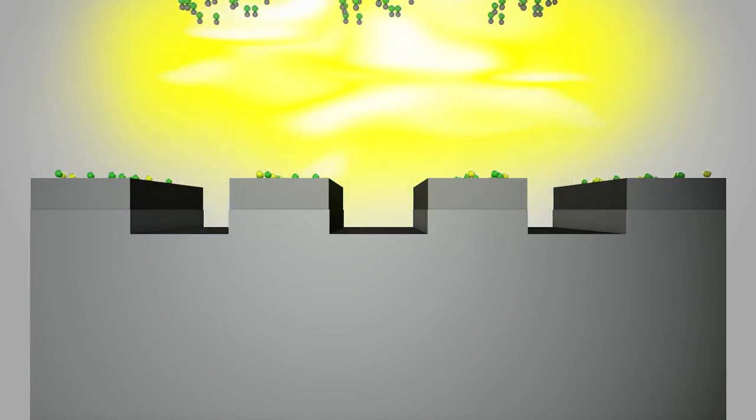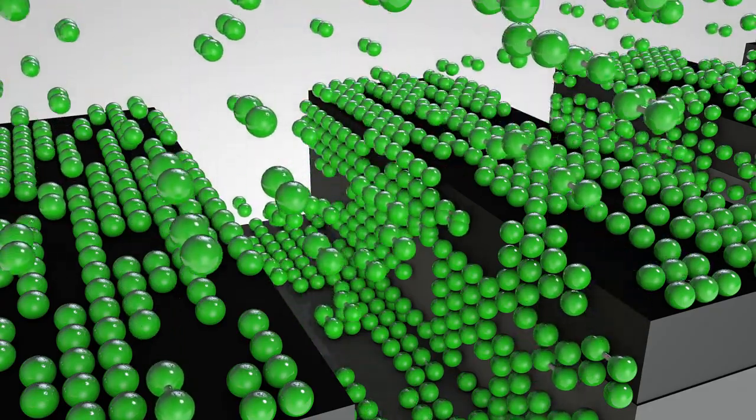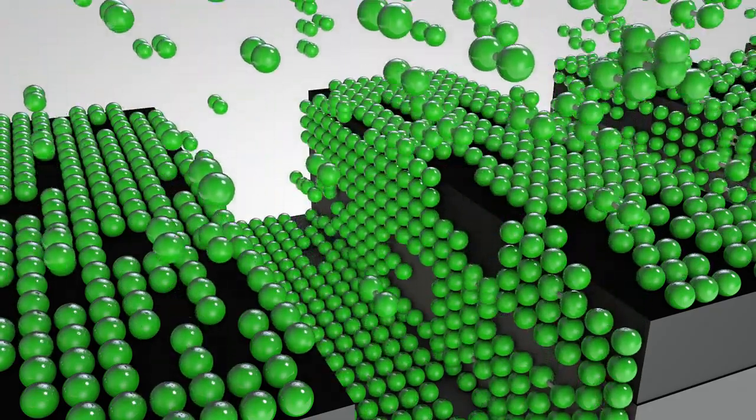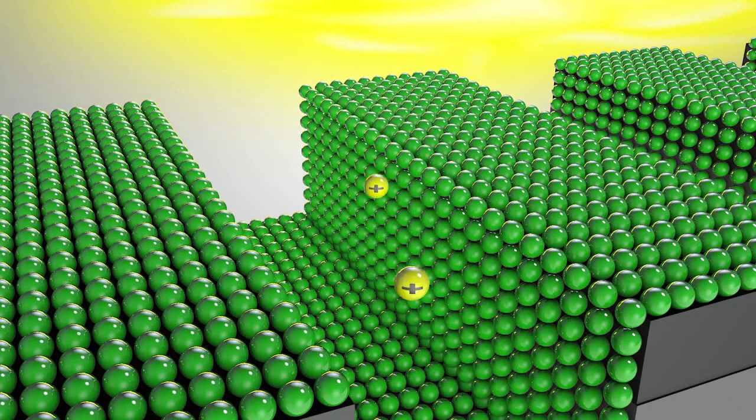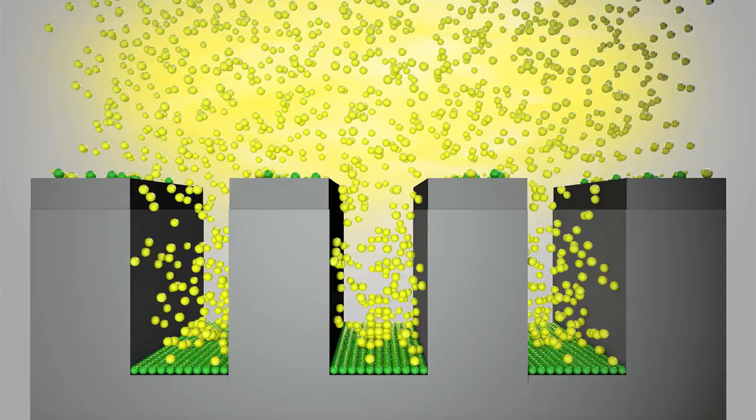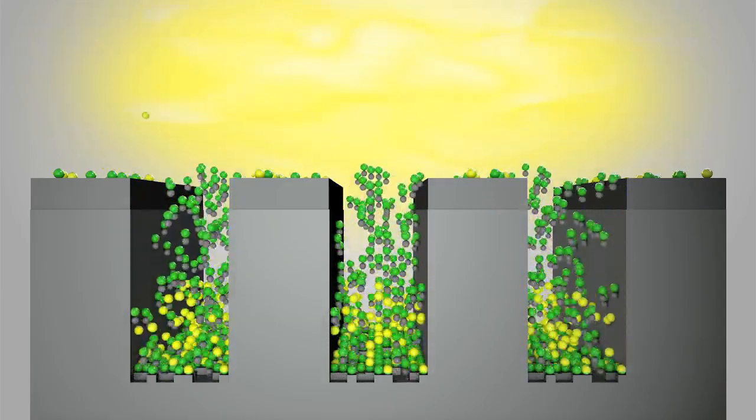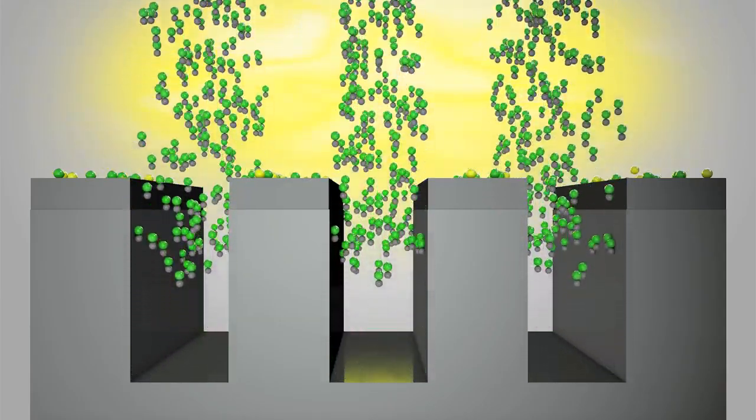Using ions allows for the directional etching required to form deep, narrow structures. One of the biggest challenges for ALE has been throughput, and this is where ALE benefits from having ALD as a predecessor. Fast switching between individual steps and the use of plasma are the keys to this process.